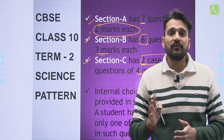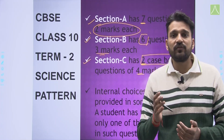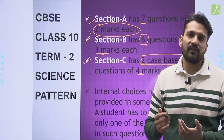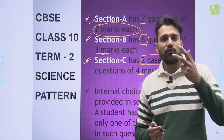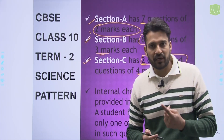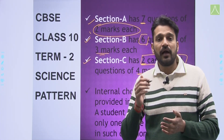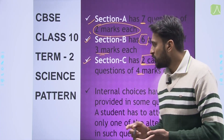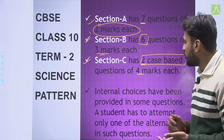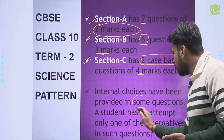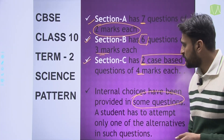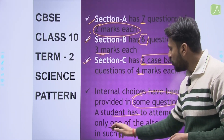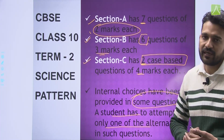Where will you get choices? Choices will be given to you in the form of internal choices — that is, within any question, out of 2 given questions, you have to attempt any one. But attempting any one question is compulsory. Internal choices have been provided in only some questions, not in all questions. A student has to attempt only one of the alternatives.